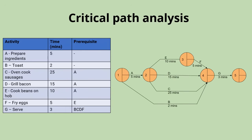We start with a node labeled number one. There are no prerequisites for preparing the ingredients and doing the toast, so we can have these two activities simultaneously coming out of node one. The sausages, the bacon, and the beans — activities C, D, and E — all have the preparation of the ingredients as a prerequisite, so we put our second node here with activities C, D, and E coming out of it at the same time.